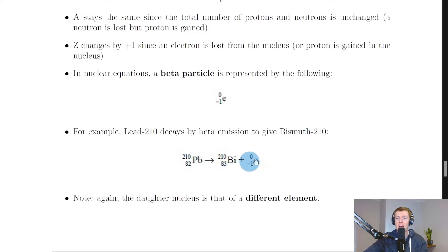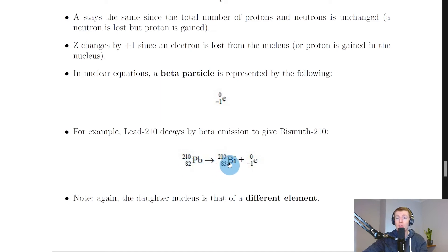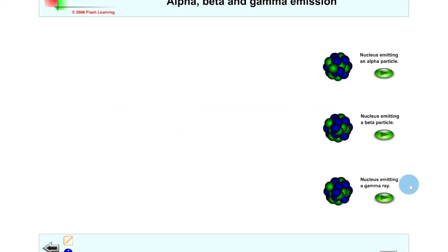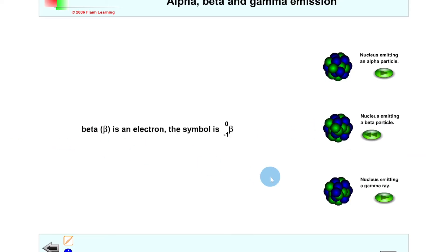In any nuclear reaction, mass number and atomic number must be conserved — the same on both sides of the equation. The mass number is 210 on the left, and 210 plus zero gives 210 on the right. For atomic number, we have 82 on the left, so 83 minus one gives us 82, confirming conservation. The daughter nucleus here is bismuth, different from the parent nucleus lead. A simulation shows the electron being fired out of the nucleus in beta decay.